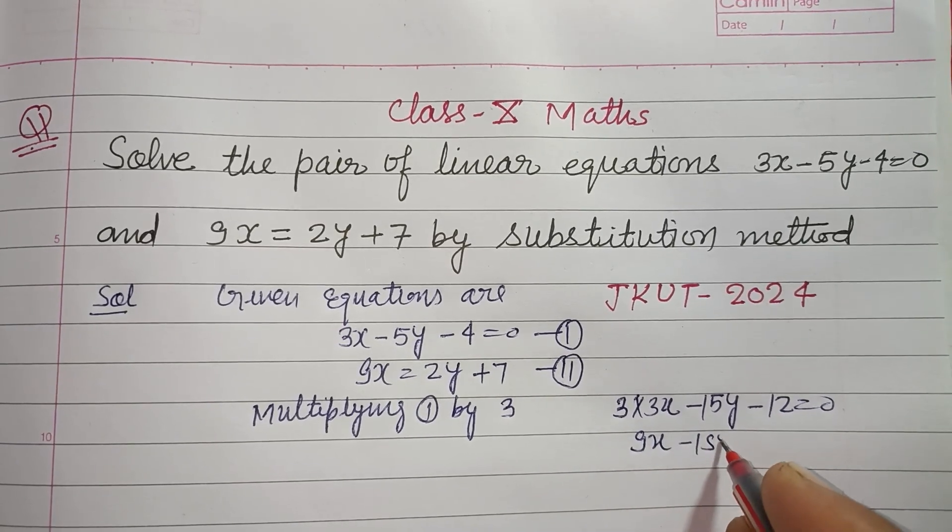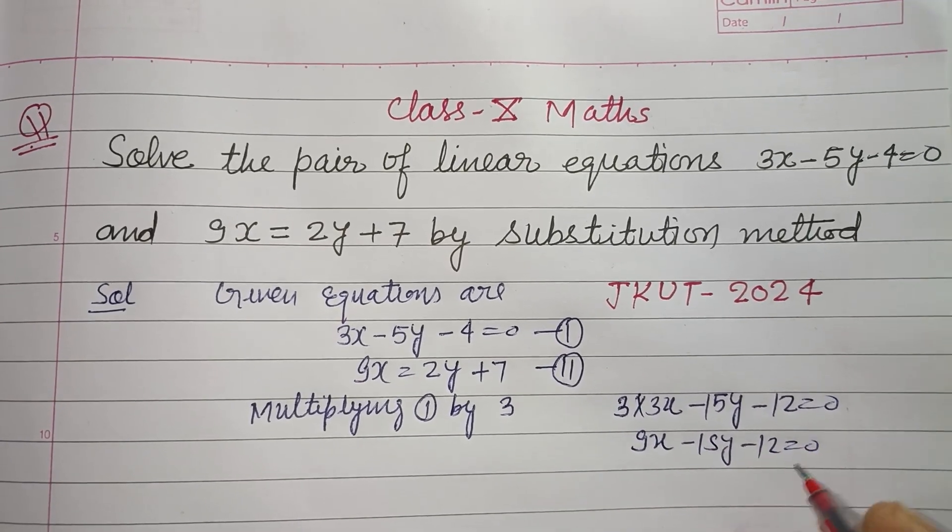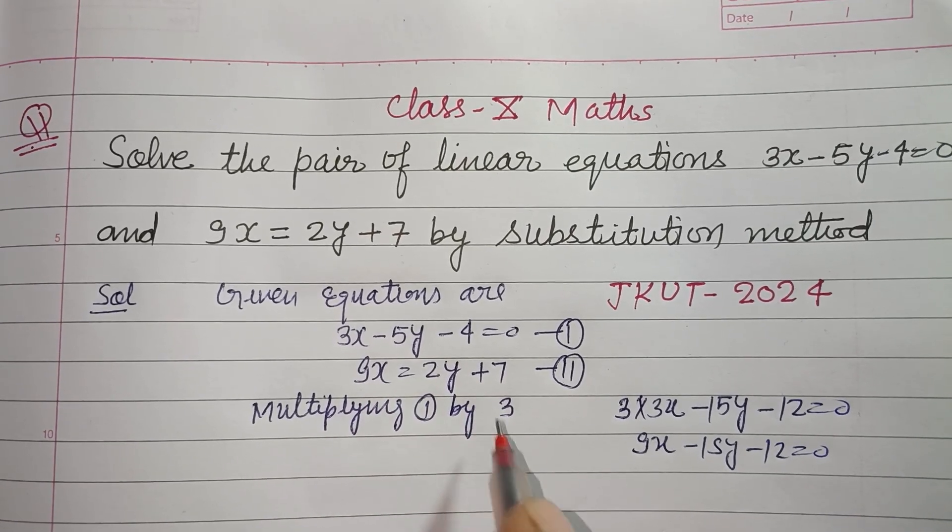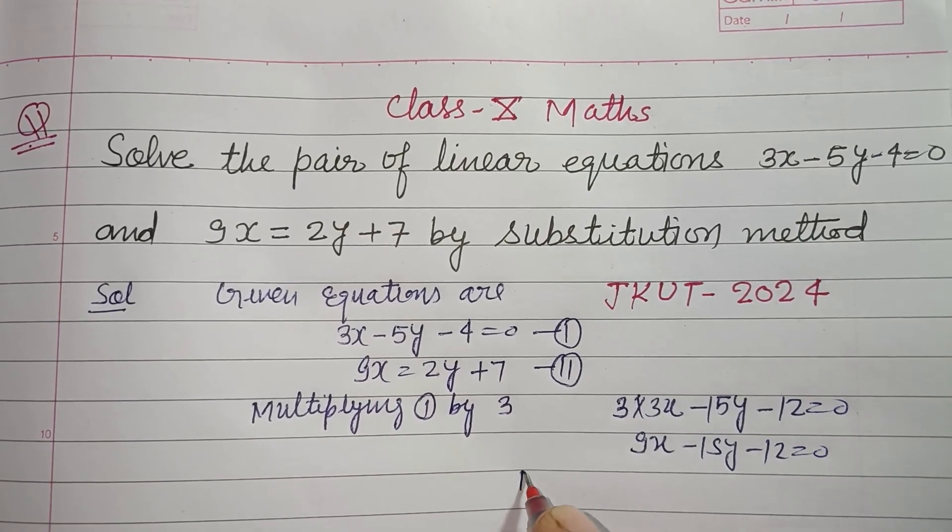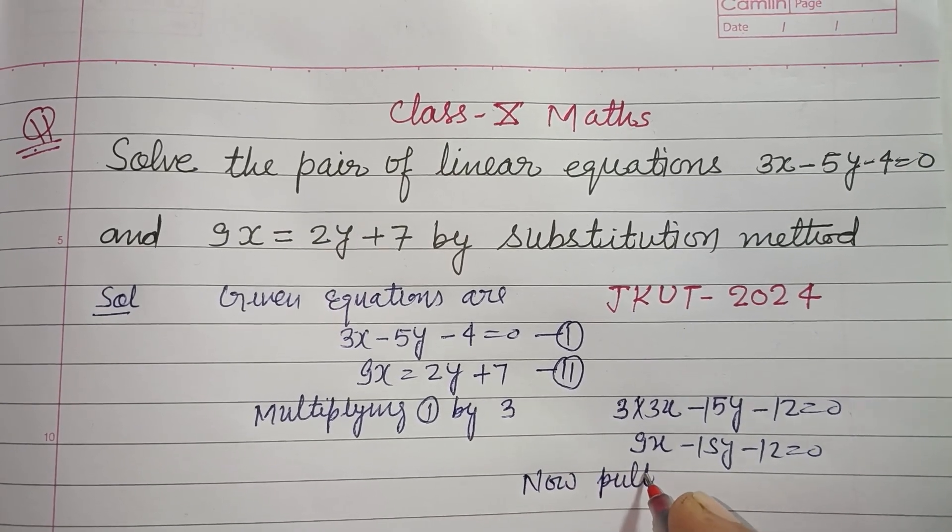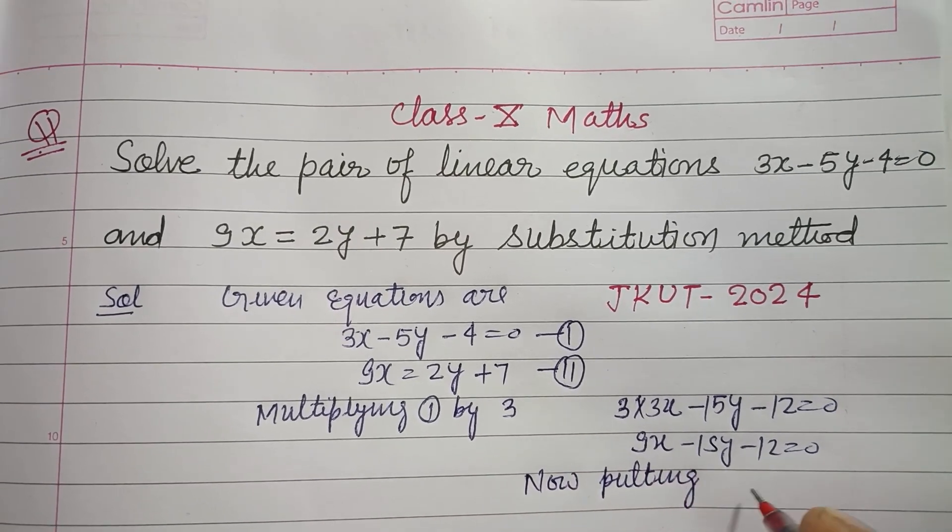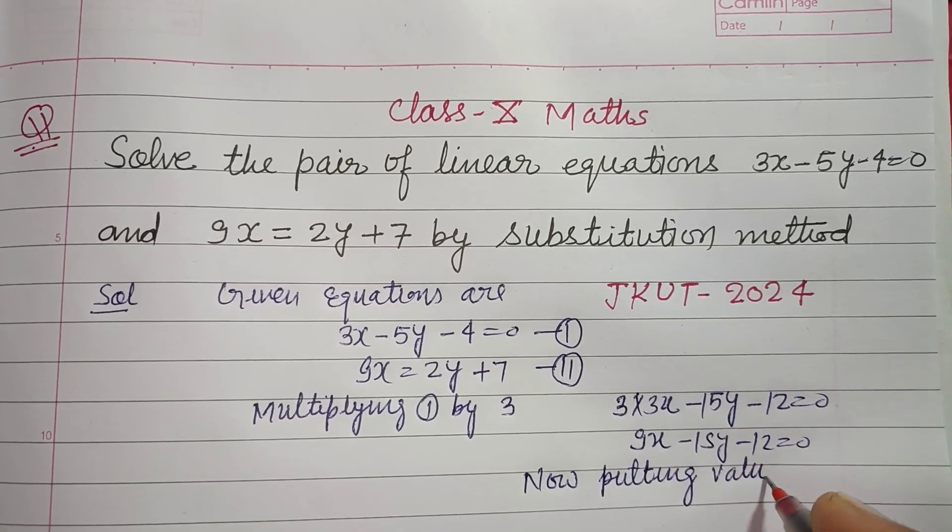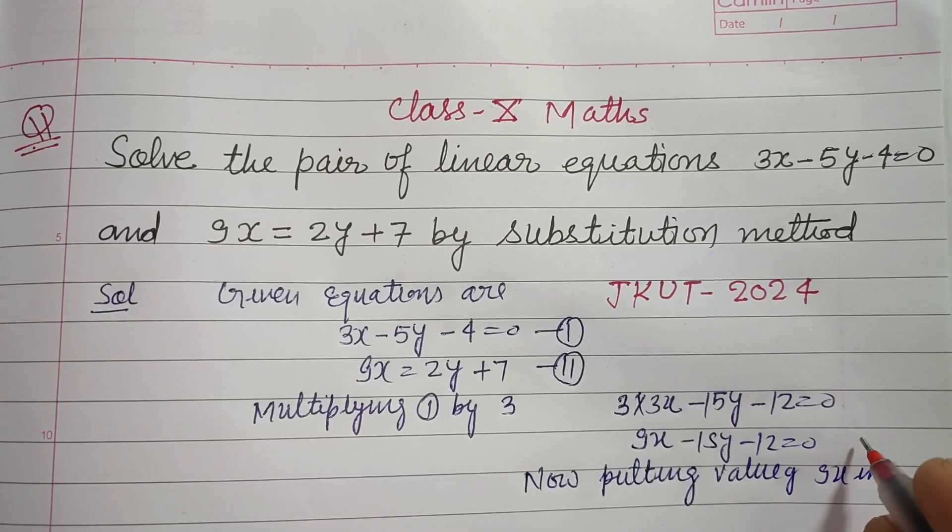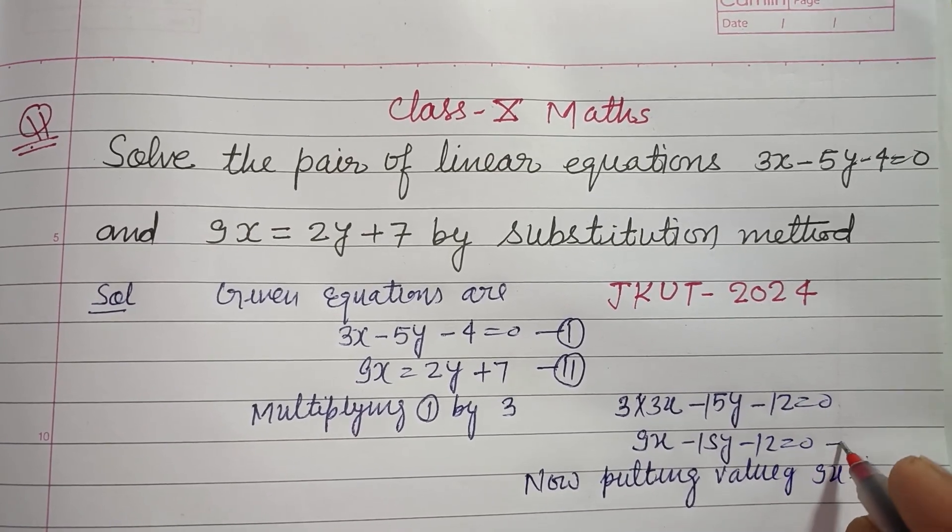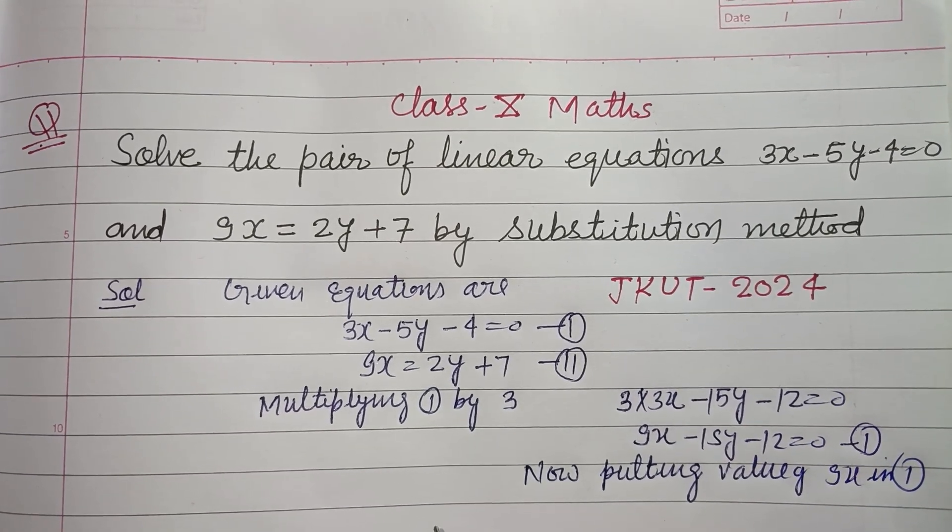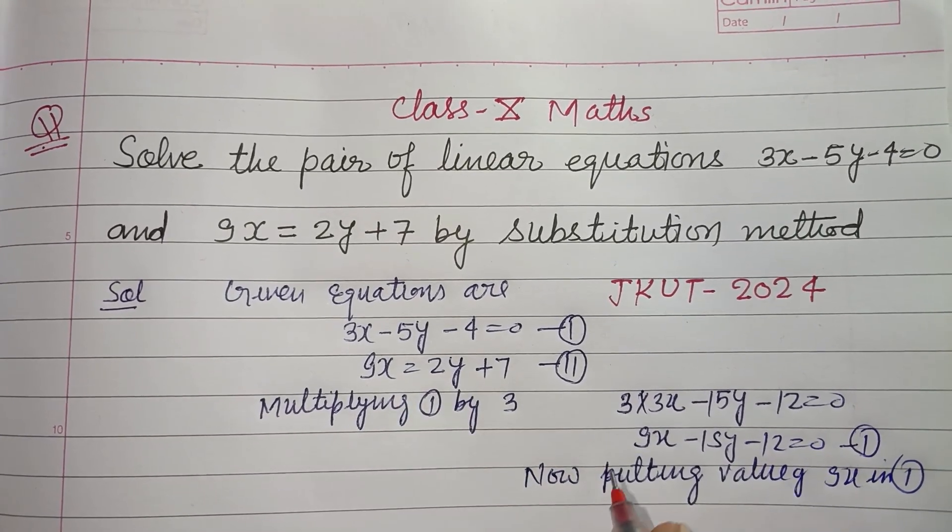So this is 9x minus 15y minus 12 equal to 0. Now substituting the value of 9x from second equation into first, putting the value of 9x which is 2y plus 7.